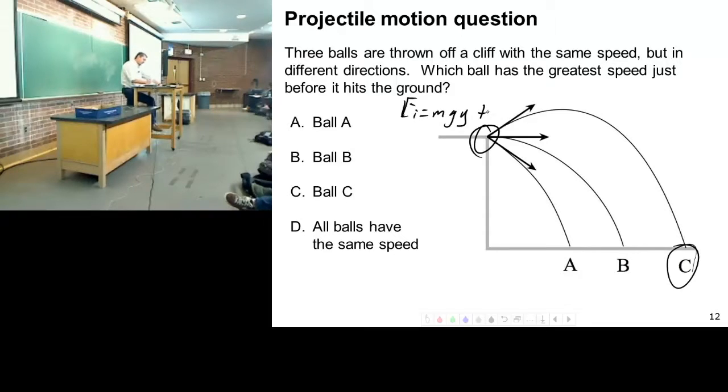But they also have, they all have some kinetic energy as well, right? They all have kinetic energy of one half M, V squared. Because they're all given the same speed, right? So their initial energy state is the same. They all start at the same height. They all have the same speed. So they have the same kinetic energy, the same potential energy.